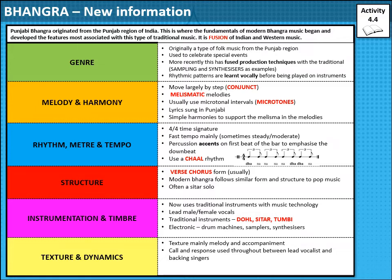Moving on to melody and harmony: in Bhangra, melodies mainly move by step, so they are often conjunct. They're very melismatic — lots of notes sung to one syllable. They are often microtonal, making use of microtones, especially in the intervals. This means they use notes between our semitones used in Western harmony, using every one of those microtones within this style. Lyrics are traditionally sung in Punjabi, as you'd expect from the example you heard. Harmonies are simple, supporting the melismatic melodies.